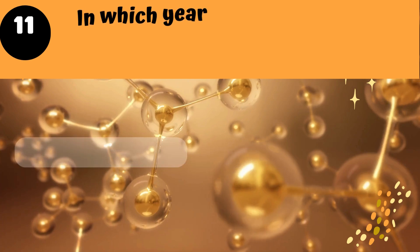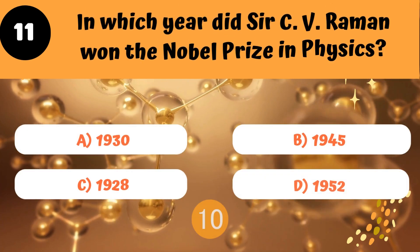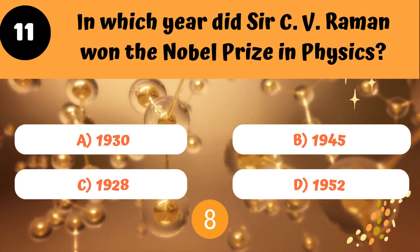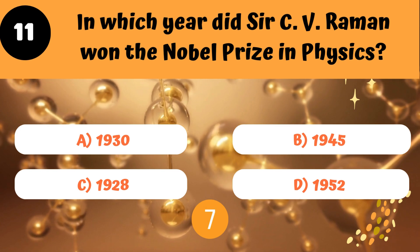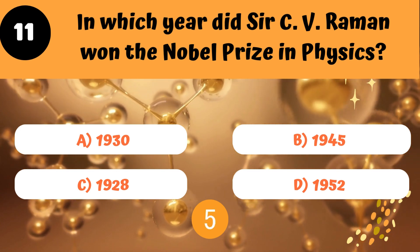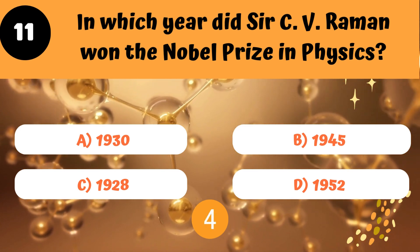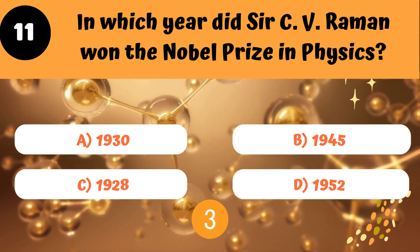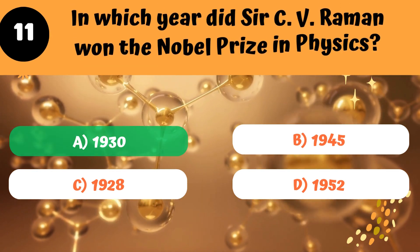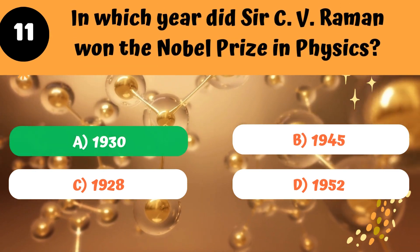In which year did Sir C.V. Raman win the Nobel Prize in Physics? The answer is A, 1930.